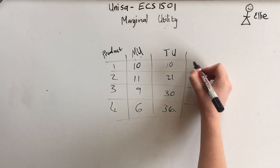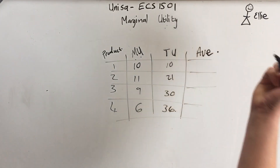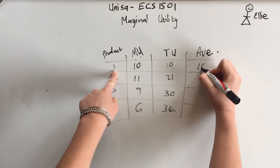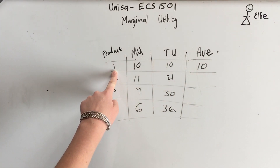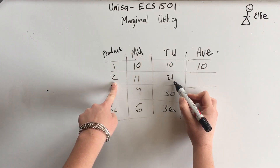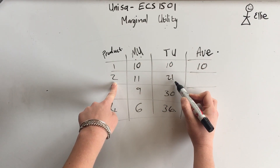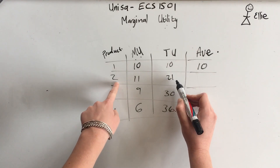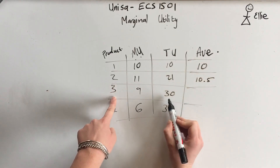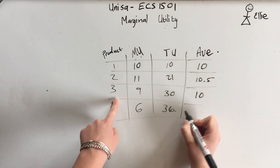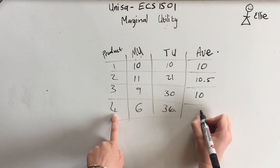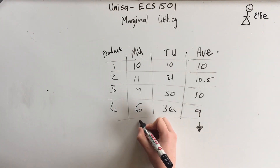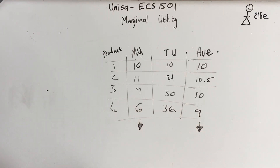Then you also have average utility. Total utility divided by units: one divided by one is still 10. The second one — total utility was 21, so 21 divided by 2 gives you 10.5. Then 30 divided by 3 gives you 10, and 36 divided by 4 gives you 9. So you can see your average is going down and your marginal utility is going down.